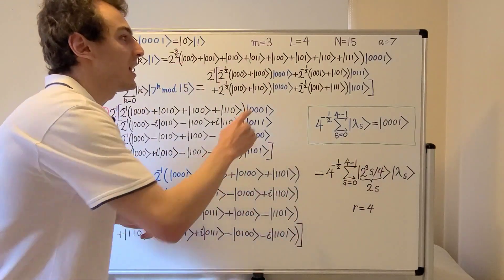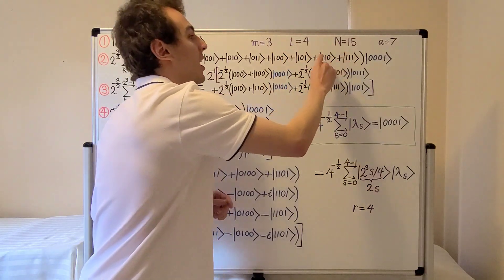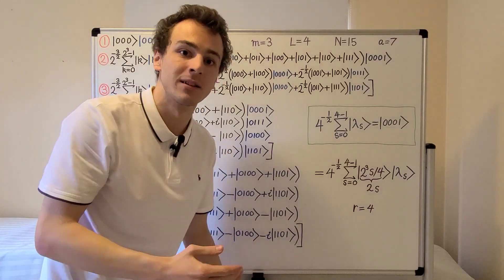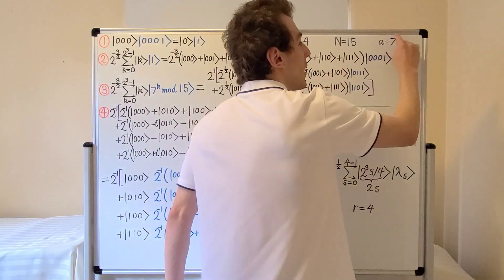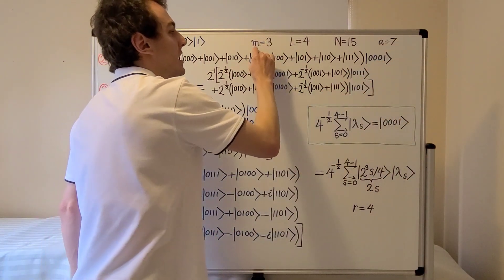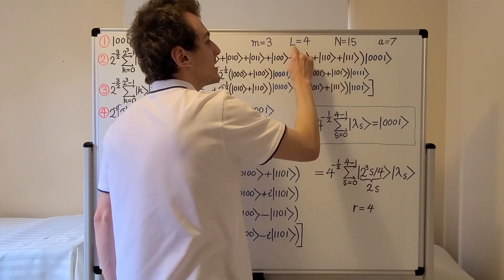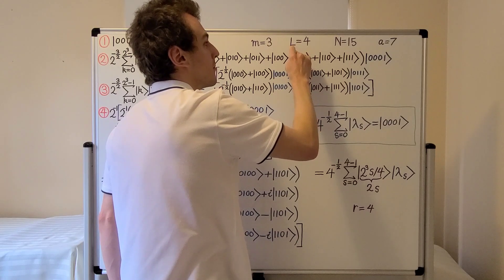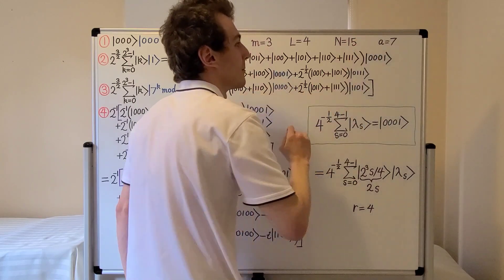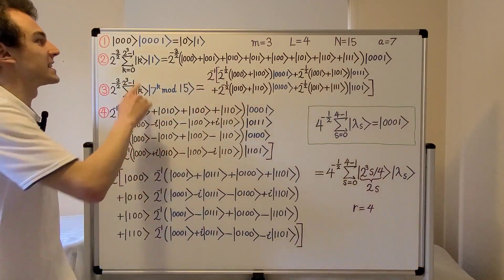Let's have a look at the values of the parameters. m, l, and n are all the same as the previous video where we used a equals 11. The difference is that we are switching to a equals 7. This value denotes the number of qubits in the first register and this value denotes the number of qubits in the second register. l is also the number of bits it takes to represent 15 in binary, so 15 is our value of n.